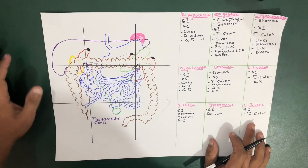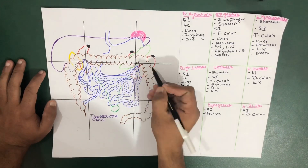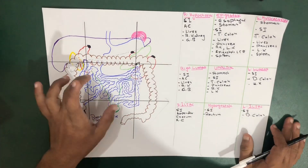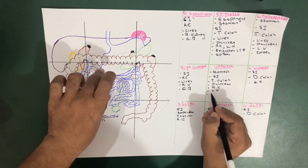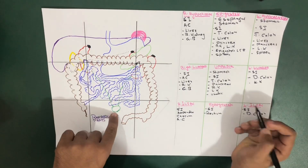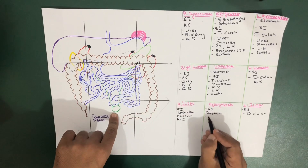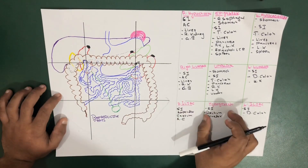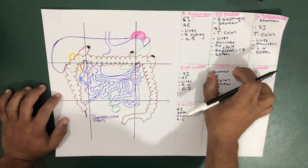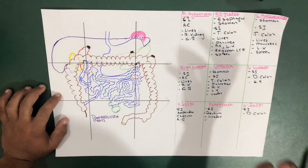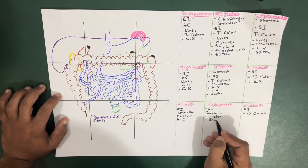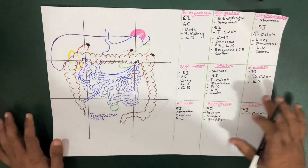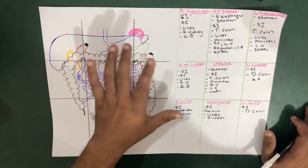From the spleen we move towards the ureter. You can see the kidney in red color — from the kidney the ureters take out urine. The ureter is present in the umbilical region and also in the hypogastric region. The urinary bladder is only present in the hypogastric region.